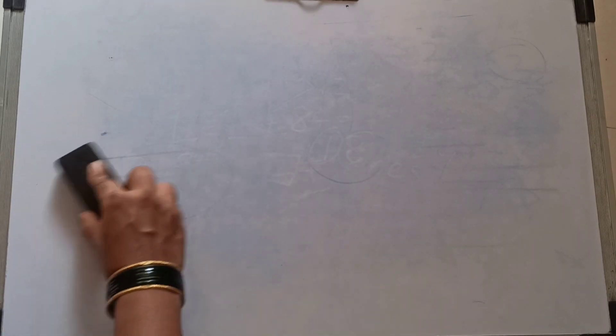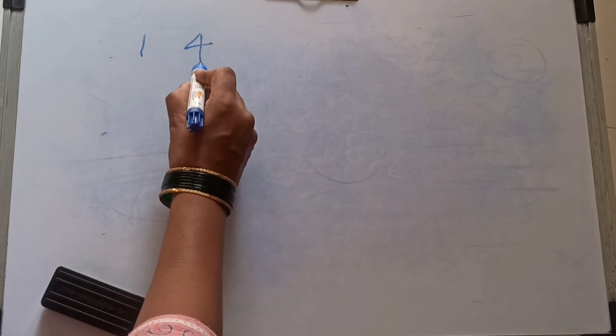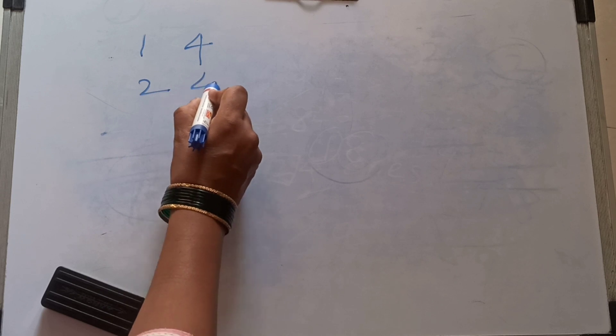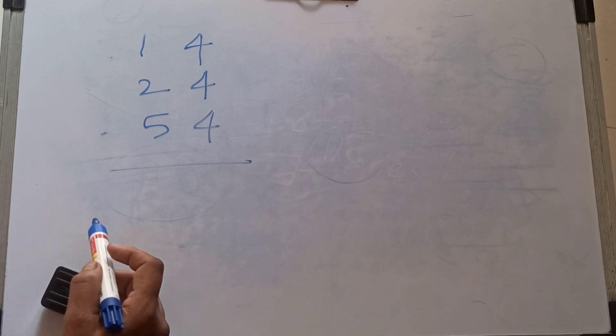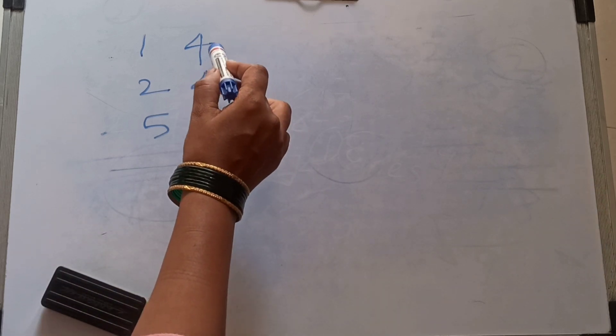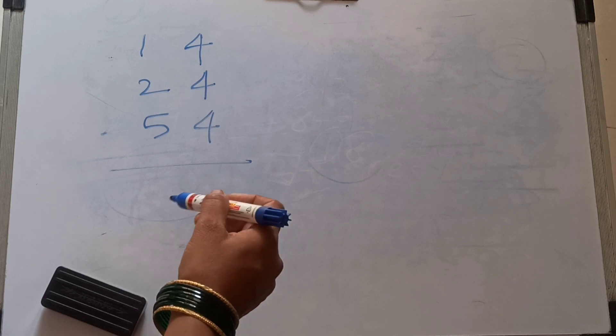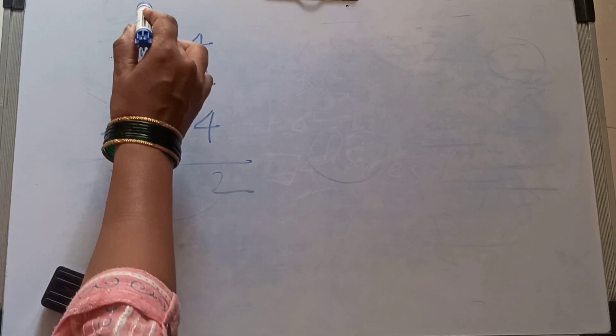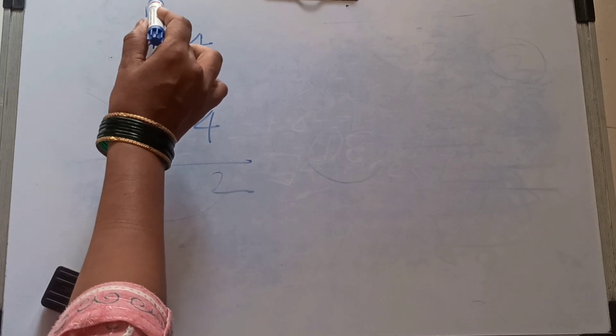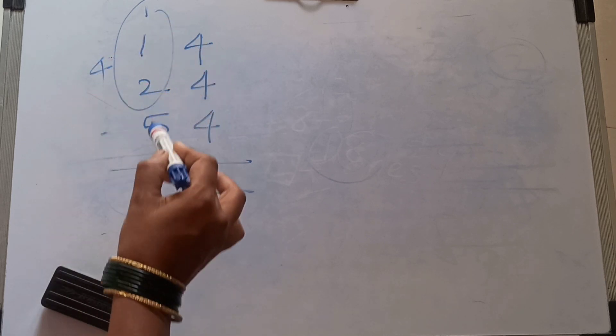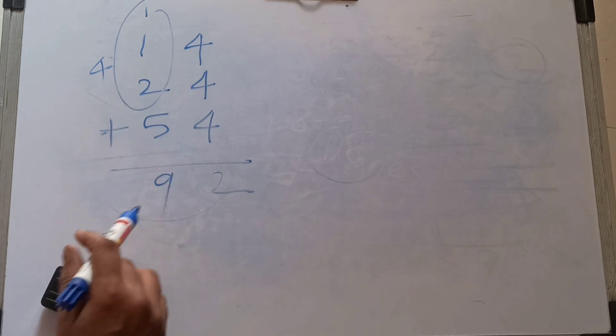Next sum: 14, 24, 54. How many 4s? Three 4s. 4 threes are 12. Right here 2, and 1 carried over. 1, 2, 3, 4, 4 plus 2 is 9. Our answer 92.